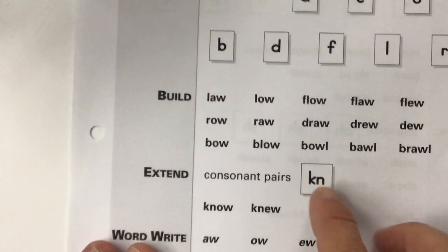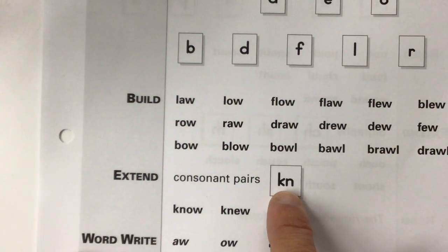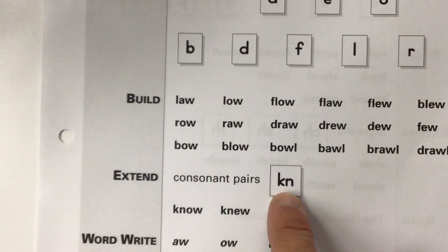All right, you're going to pull these letters together and make all these words down here. And then you're going to add in the consonant pair K-N. K-N just says the N sound.